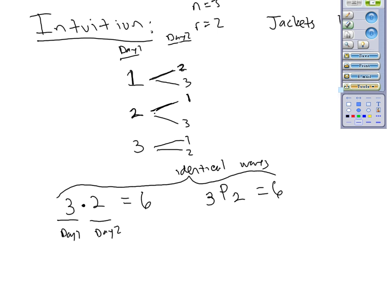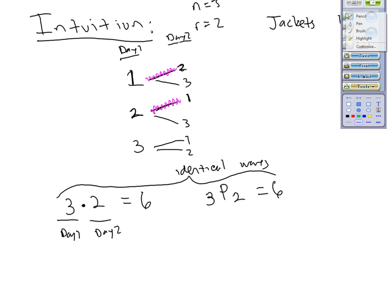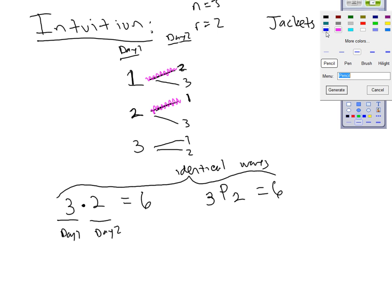First thing I'm going to do is come over here and highlight in red the ones that are similar. So 1, 2 is the same thing as 2, 1. So that's a duplicate pair. So really, these two events, if order doesn't matter, then these are considered to be the same thing.